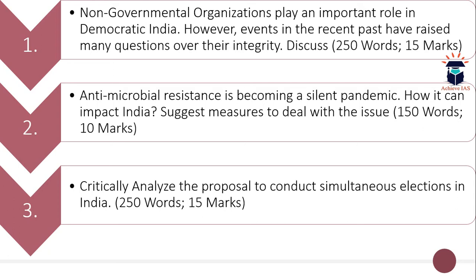The second question is: Antimicrobial resistance is becoming a silent pandemic — how can it impact India? Suggest measures to deal with the issue. The word limit is 150 and the maximum marks are 10. The third question is: Critically analyze the proposal to conduct simultaneous elections in India.